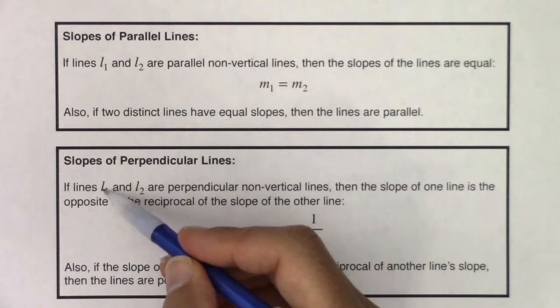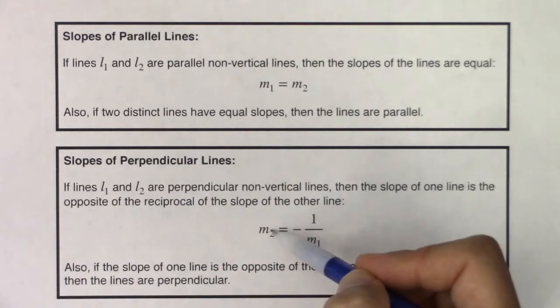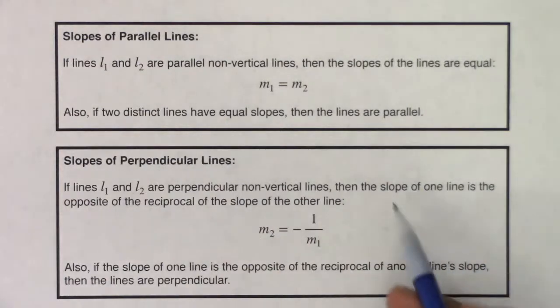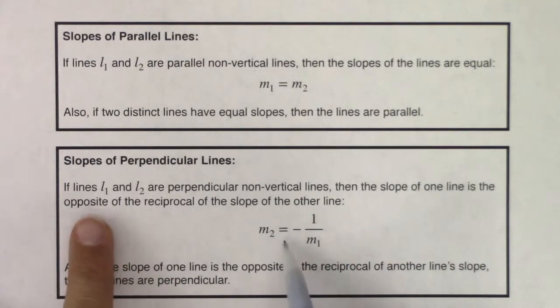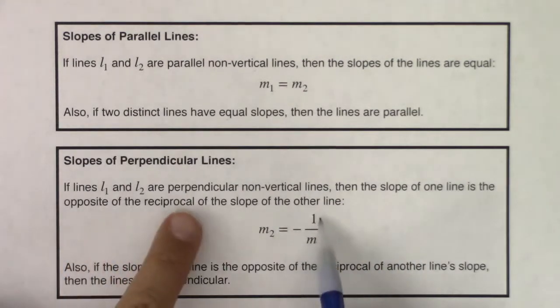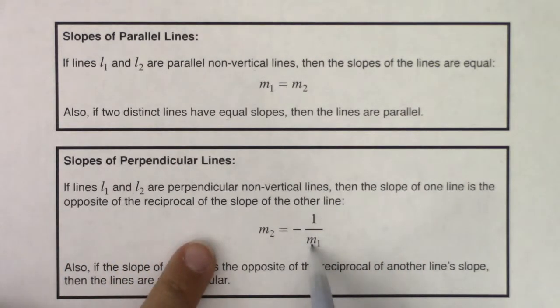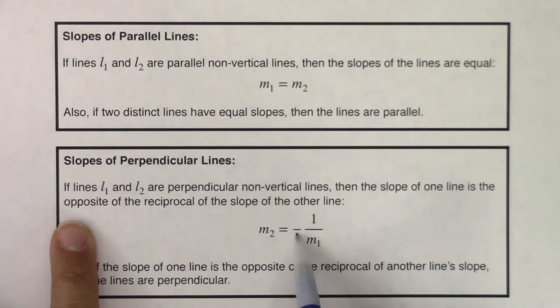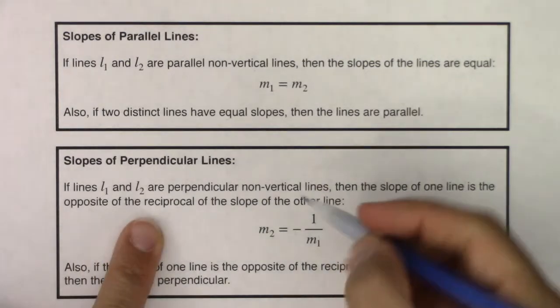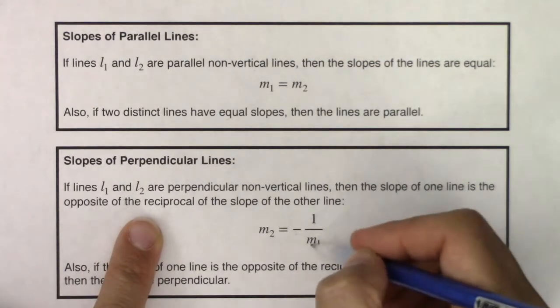Again, M sub 1, slope of the first line, M sub 2, slope of the second line. And let's look at this phrase, right? It's the opposite. So you see the negative sign. The slope of one line is the opposite of the reciprocal of the slope of the other. So when I say opposite, I have this negative symbol. When I have reciprocal, I have the reciprocal, right? 1 over that number.